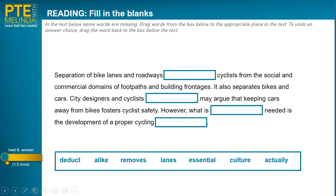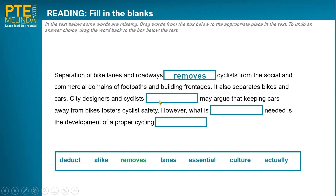How did you go? Was it enough time? Did you complete it? Are you confident with your answers? Did you guess some of them? Let's have a look at those answers and see how you went. The first one we decided was 'removes.' For the second one, let me read a little bit before and after: 'city designers and cyclists [blank] may argue.' Possibly 'all may argue,' 'both may argue' — I'm not quite sure. Let's have a look — there's nothing like 'both' or 'all' in the options.